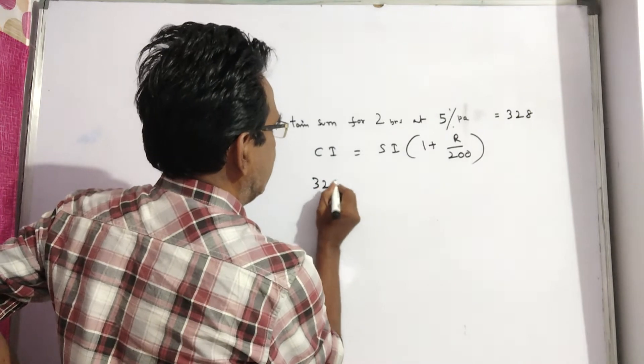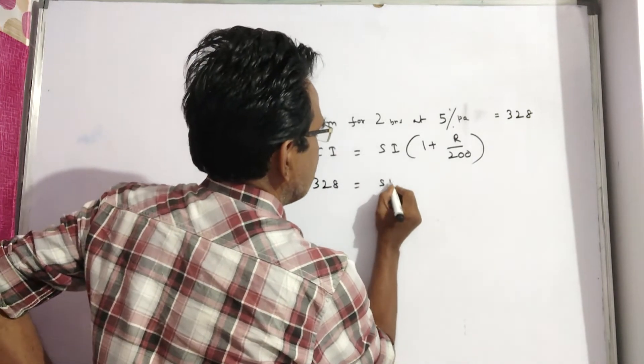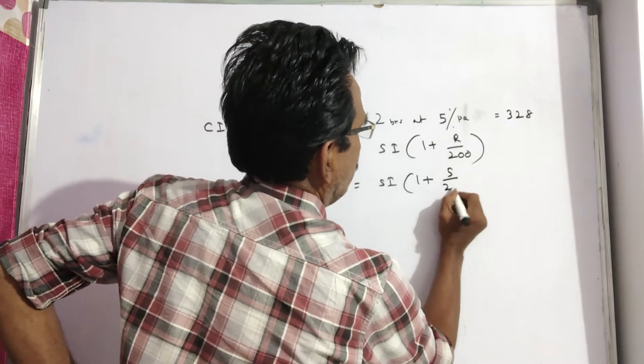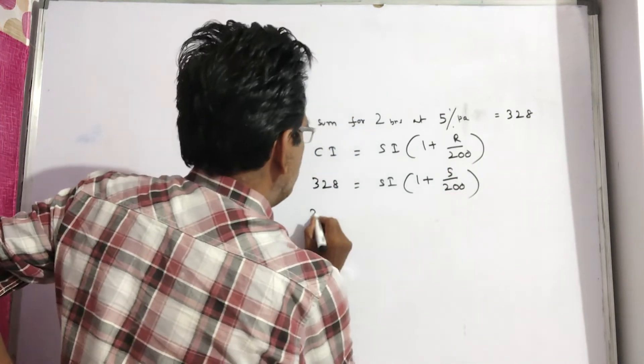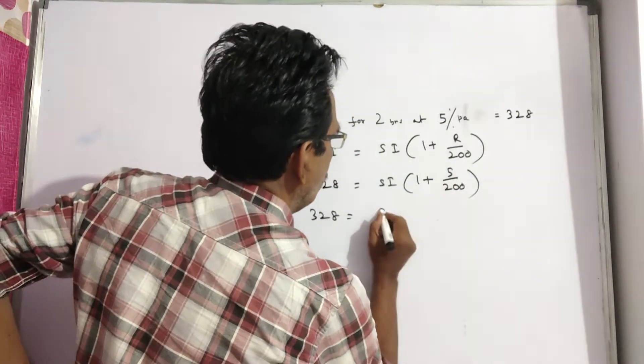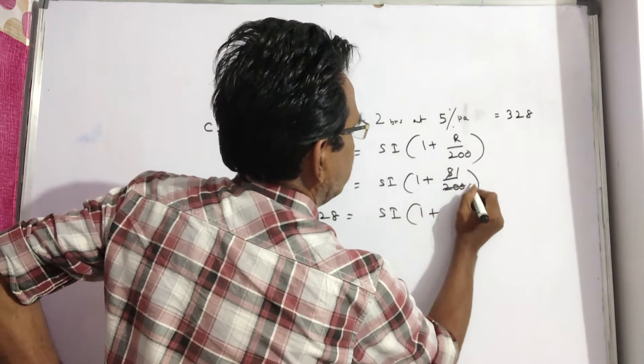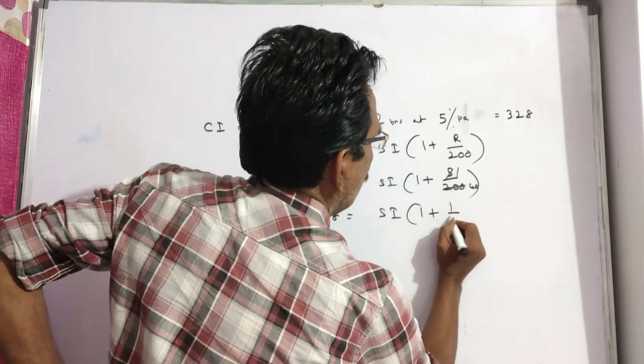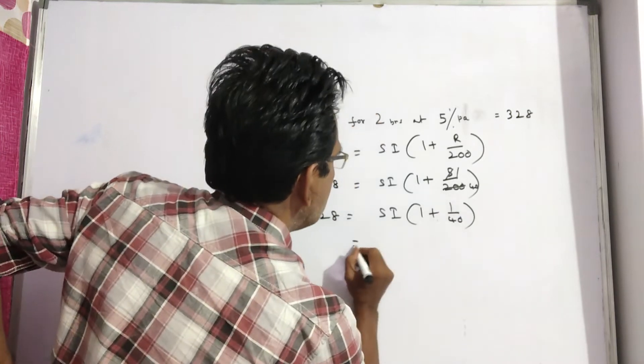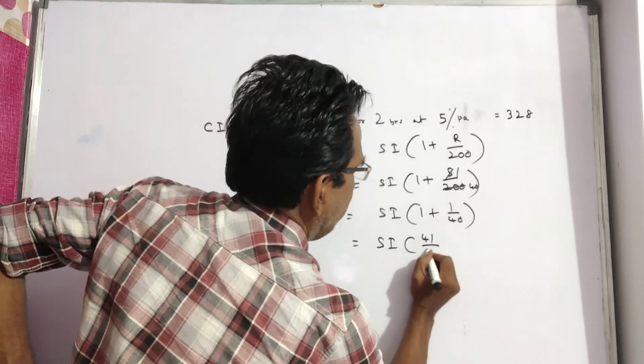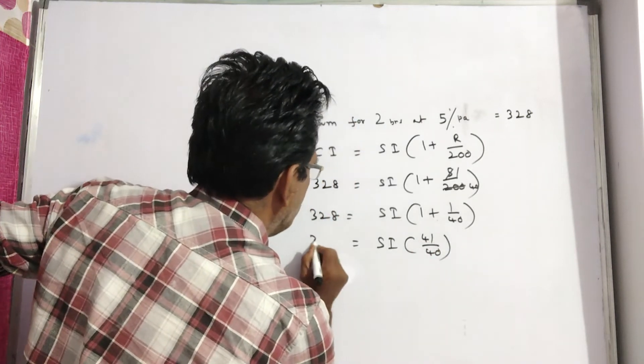So CI 328 is equal to SI into 1 plus 5 by 200. Now this is equal to SI into 40 plus 1, 41 by 40, which equals 328.